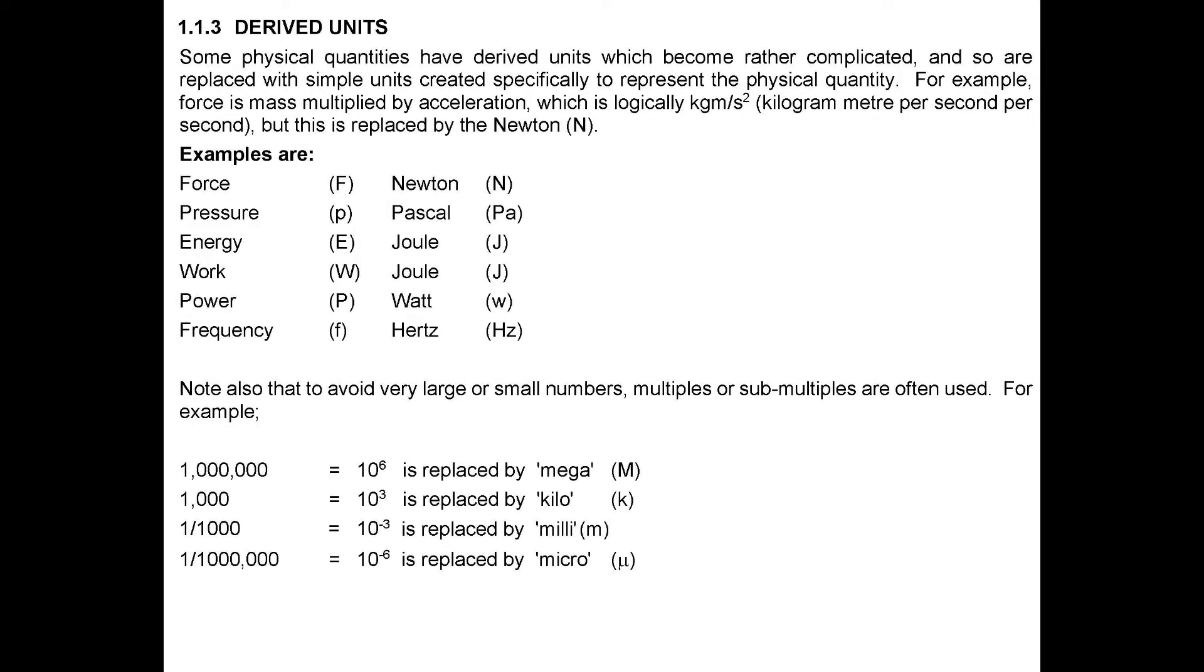Note also that to avoid very large or small numbers, multiples or submultiples are often used. For example, 1 million equals 10 to the power of 6, is replaced by mega. 1 thousand equals 10 to the power of 3, is replaced by kilo. 1 over 1 thousand equals 10 to the power of minus 3, is replaced by milli. 1 over 1 million equals 10 to the power of minus 6, is replaced by micro.